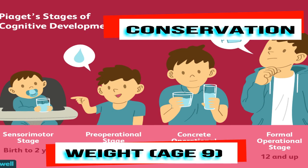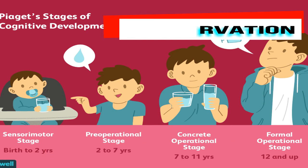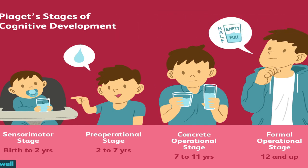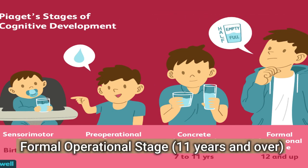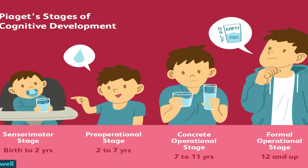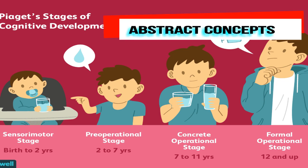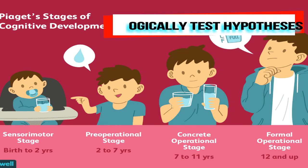Conservation is the understanding that something stays the same in quantity even though its appearance changes. Formal Operational Stage (11 Years and Over): The formal operational stage begins at approximately age 11 and lasts into adulthood. During this time, people develop the ability to think about abstract concepts and logically test hypotheses.